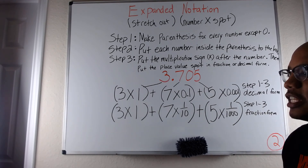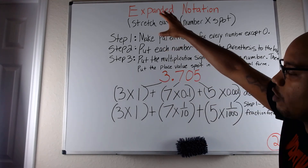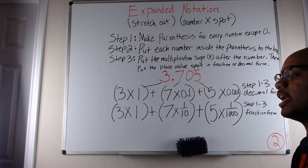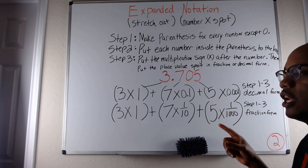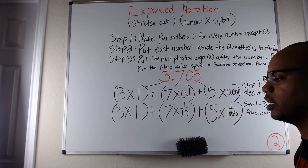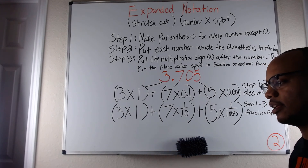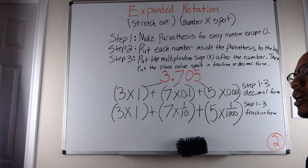Expanded notation means to stretch out the number and notate it by place value — you put the number inside the parentheses to the left and then multiply by the place value spot it's in. This is Mr. Traham at MrTDoNumbers with your lesson on expanded notation. Peace.